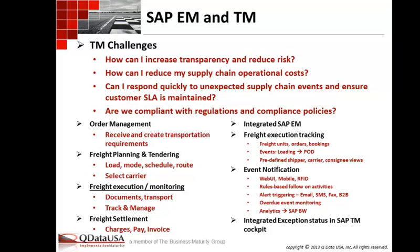On the TM side, EM plays a role in freight execution and monitoring. If you're looking at where your truck is and any statuses of the execution piece of your transportation planning, that is all coming out of event management. Your execution tab on the TM order, freight order, freight unit is actually coming out of event management. On the EM side, it's tracking freight units, orders, and bookings. All events from loading through to POD are captured in the systems. We have predefined roles of shipper, carrier, and consignee delivered so you can get your web user interface going.